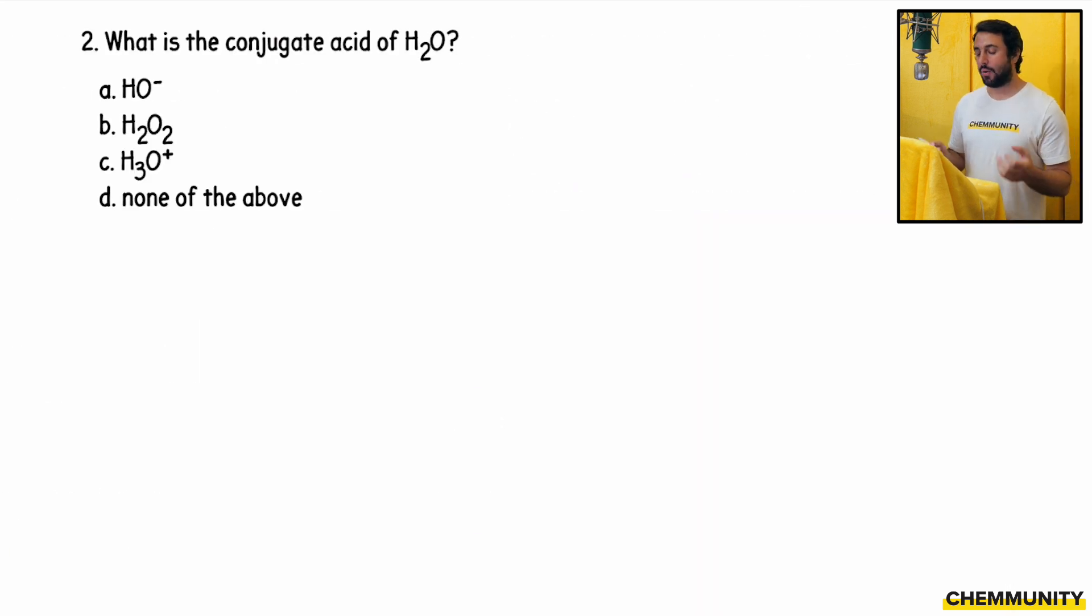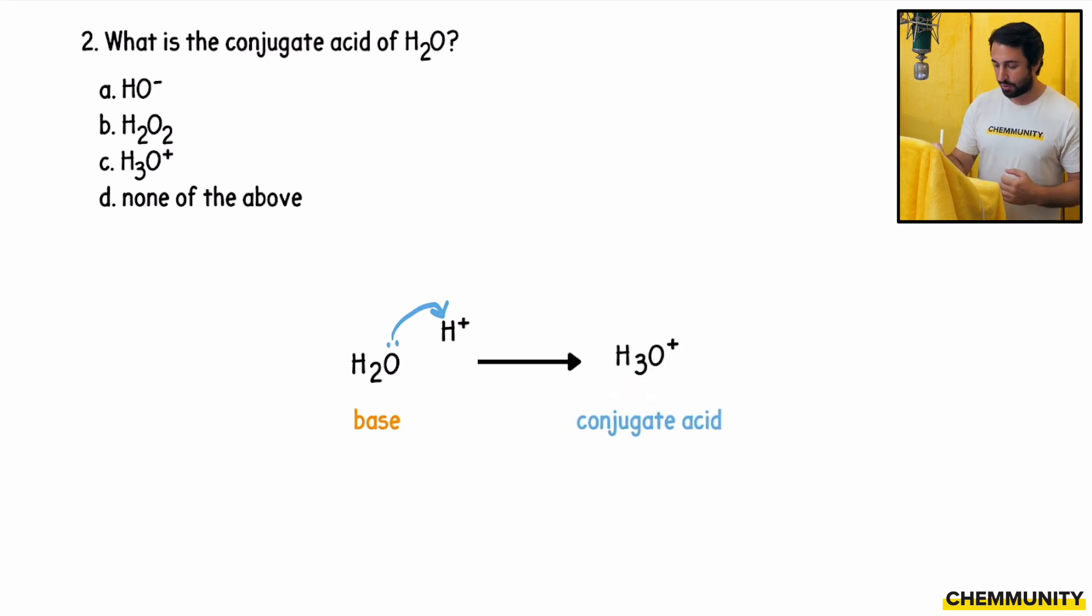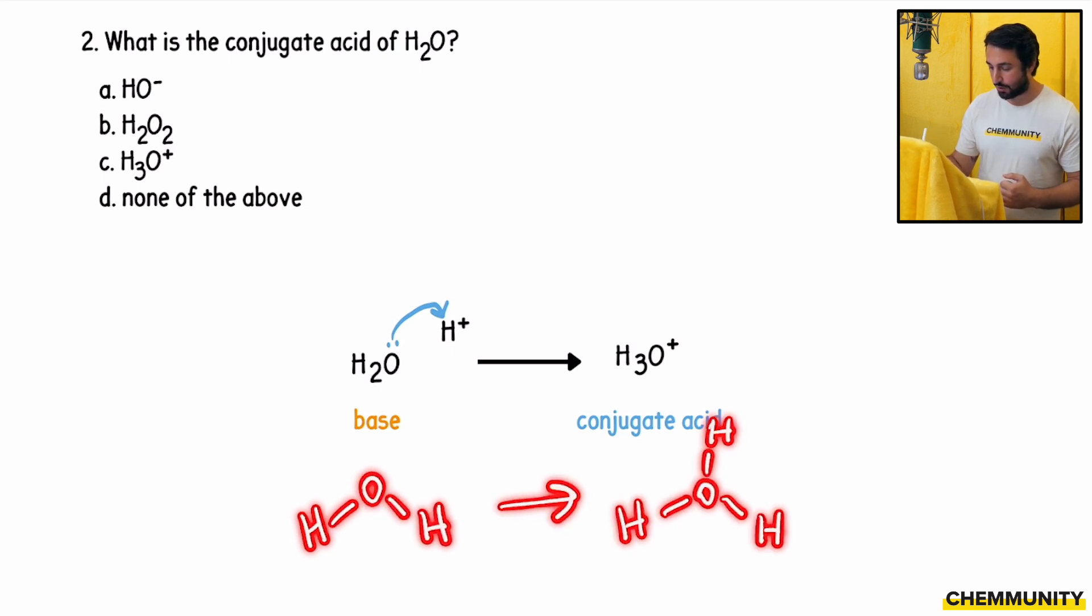Number two asks, what is the conjugate acid of H2O? In order to get the conjugate acid of something, we need to add a proton to it. H2O is going to act as a base and pick up a proton. We've got water acting as a base, meaning it accepts a proton.